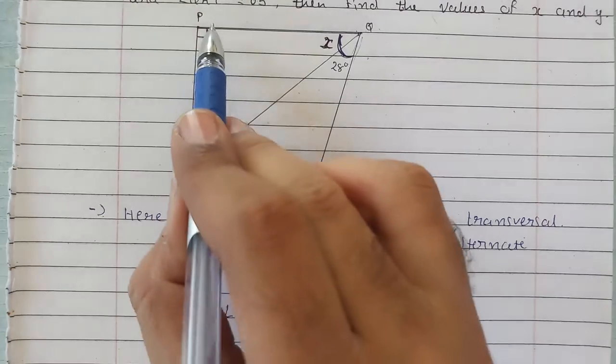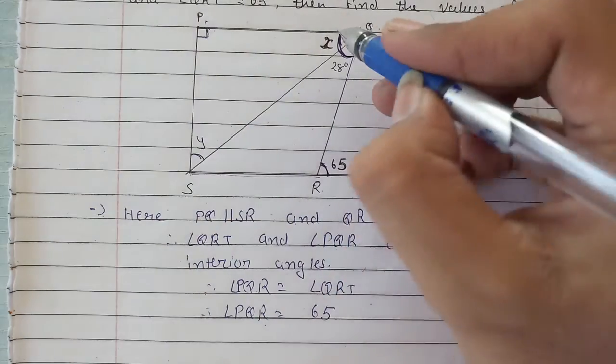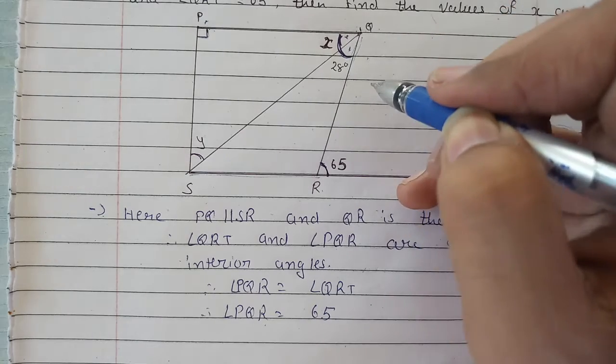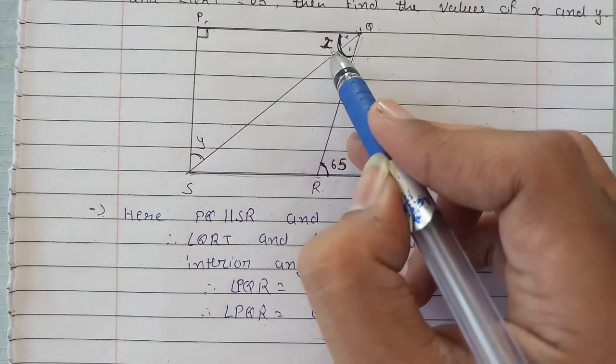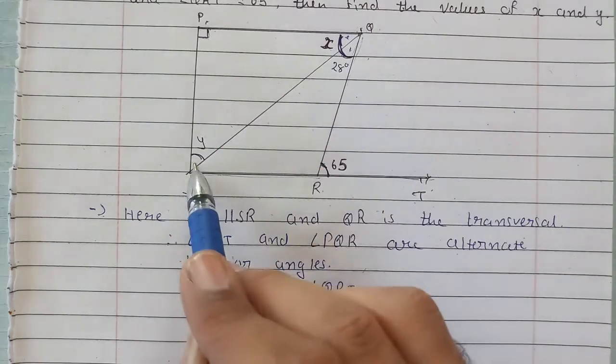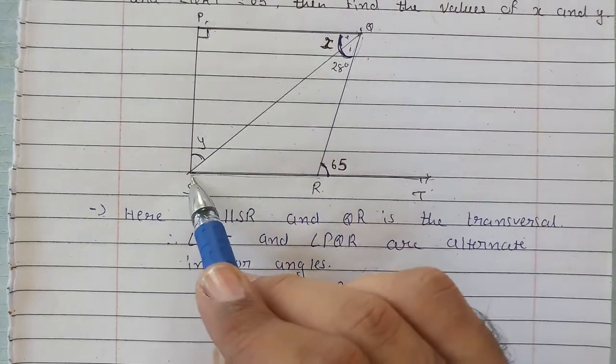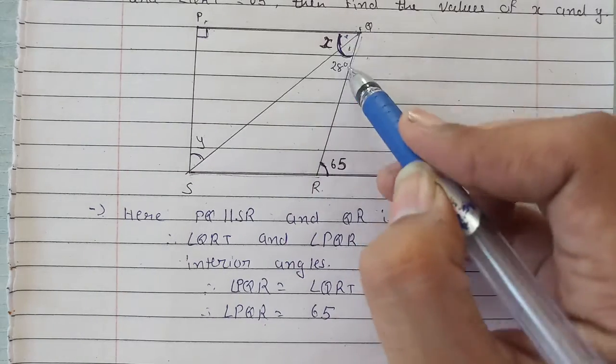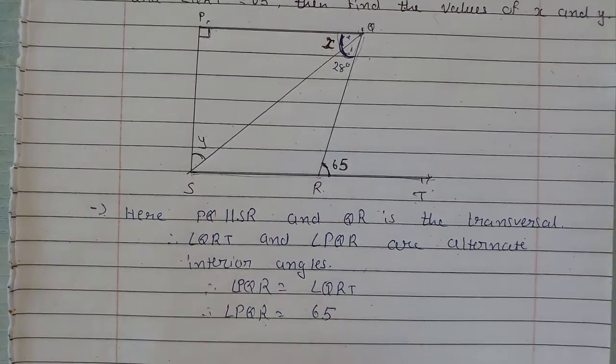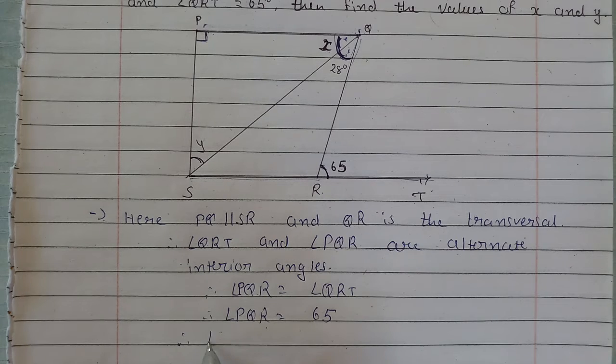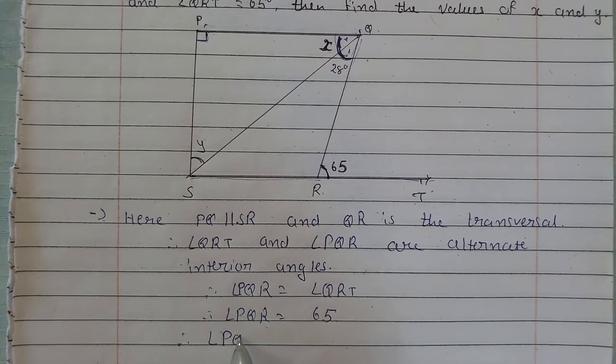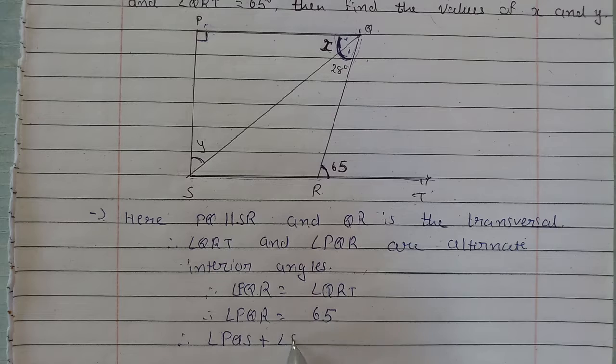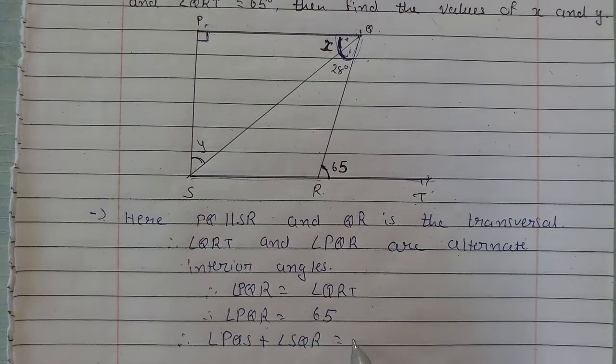Now PQR is the sum of these two angles. This angle is called PQS and this angle is called SQR. So PQR will be angle PQS plus angle SQR, that is equal to 65.